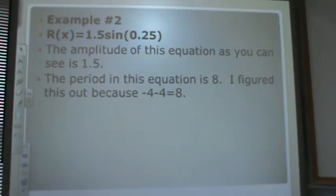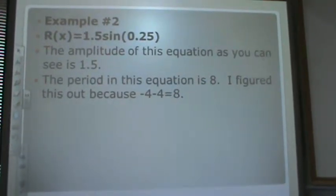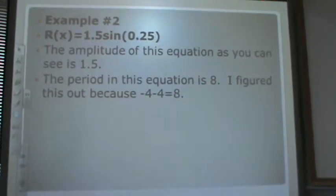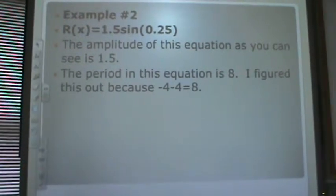Example number 2 is r of x equals 1.5 sine of 0.25x. I found that the amplitude of this equation as you can see is 1.5. The period in this equation is 8.